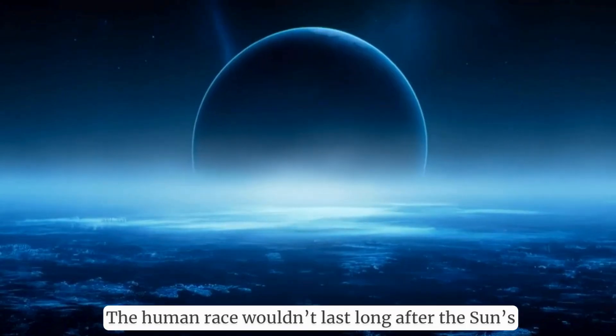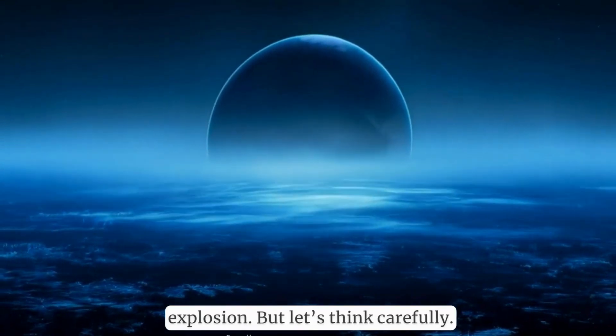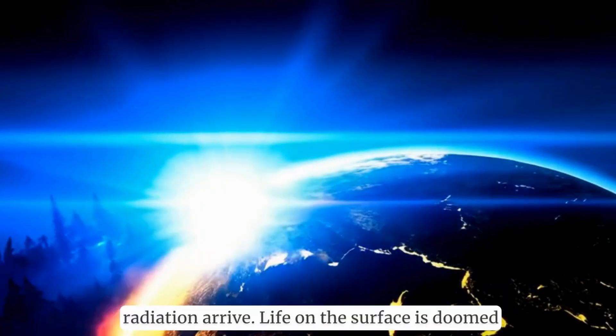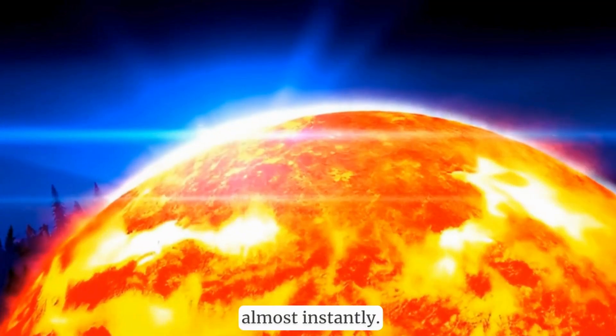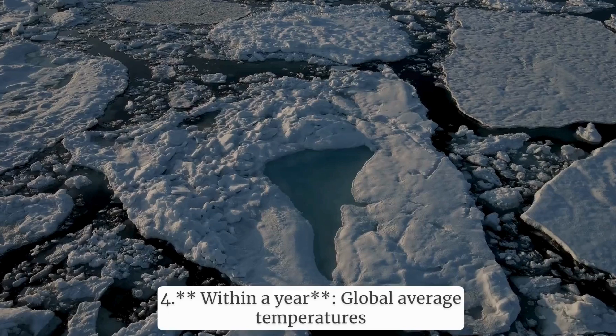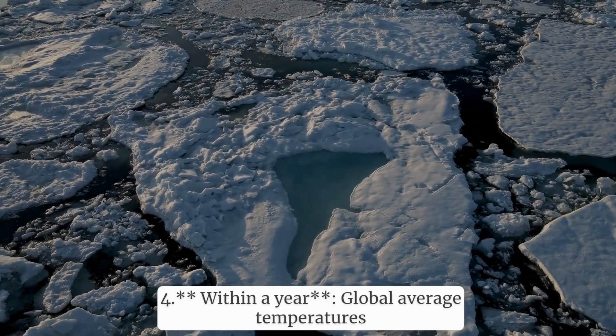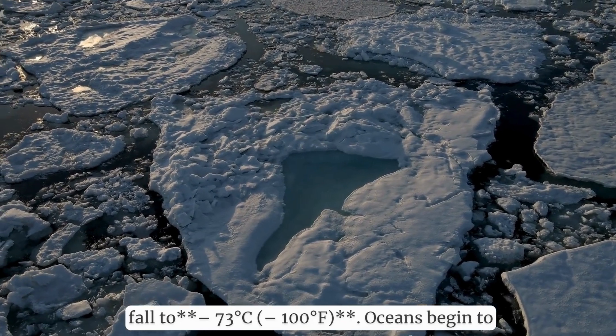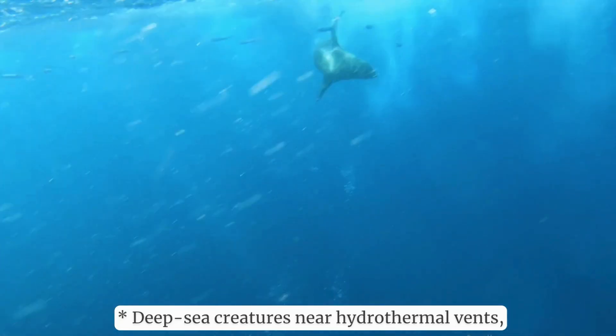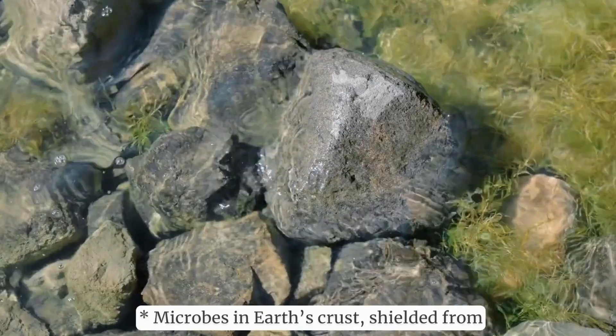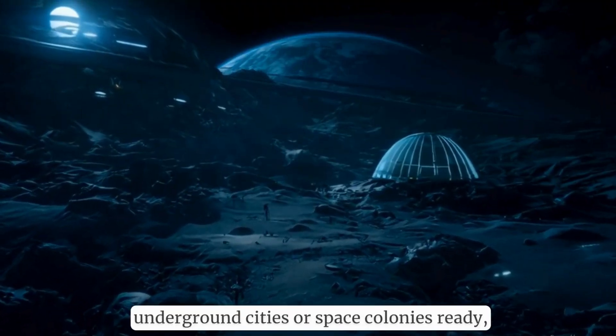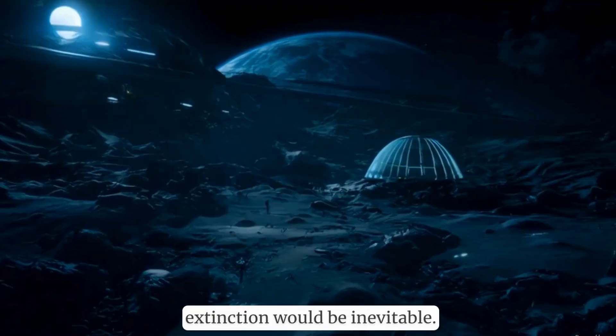The human race wouldn't last long after the Sun's explosion. But let's think carefully. First eight minutes: everything feels normal. After eight minutes: blinding light and radiation arrive. Life on the surface is doomed almost instantly. Within days, without sunlight, Earth's surface temperature drops below freezing. Within a year, global average temperatures fall to -73 degrees Celsius (-100 Fahrenheit). Oceans begin to freeze from the top down. Some life might cling on: deep-sea creatures near hydrothermal vents which rely on geothermal heat instead of sunlight, microbes in Earth's crust shielded from radiation. But for humans? Unless we had advanced underground cities or space colonies ready, extinction would be inevitable.